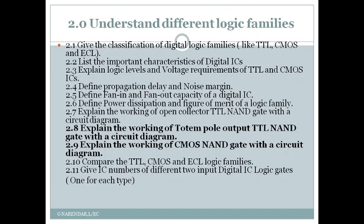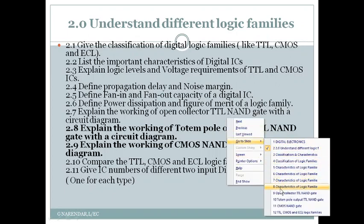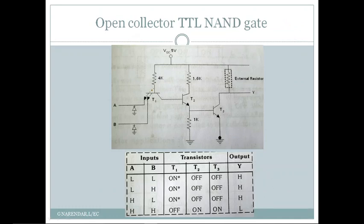We will first look at the first variant of the TTL NAND gate. The circuit arrangement for the TTL NAND gate with open collector output contains three transistors: T1, T2, and T3, all of which are NPN transistors. T1 has multiple emitters — it has two emitters — so this transistor falls under the category of multiple emitter transistors.